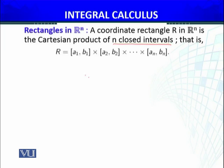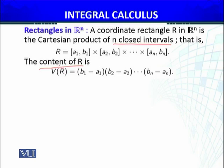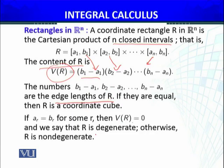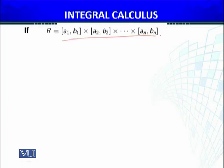A coordinate rectangle R in Rn is the Cartesian product of n closed intervals. The content of R, denoted V(R), is the product of the lengths of each interval: V(R) = (B1−A1)(B2−A2)…(Bn−An). The numbers B1−A1, B2−A2, …, Bn−An are the edge lengths of R. If any Ai = Bi, then V(R) = 0 and we say the rectangle R is degenerate; otherwise R is non-degenerate.